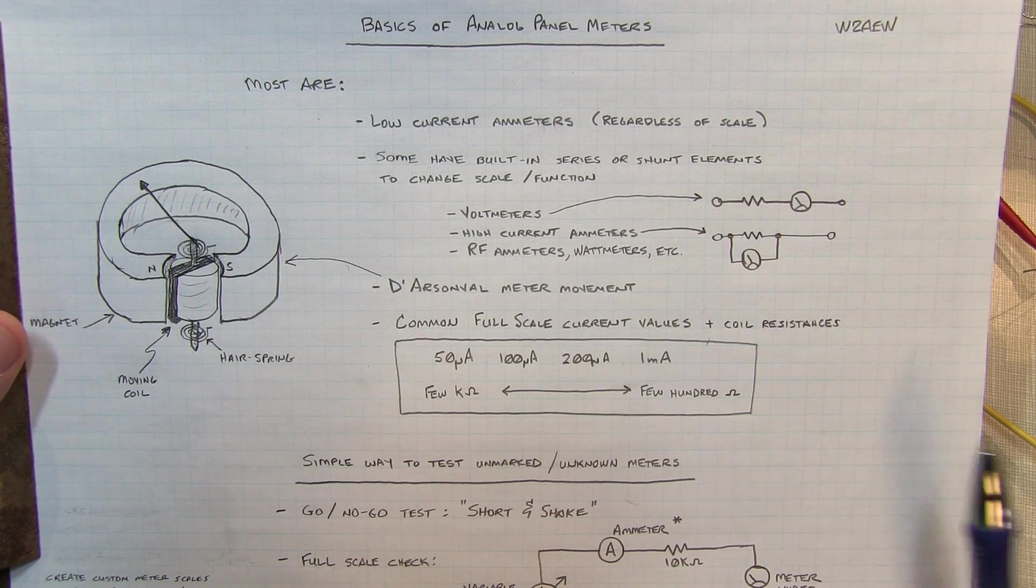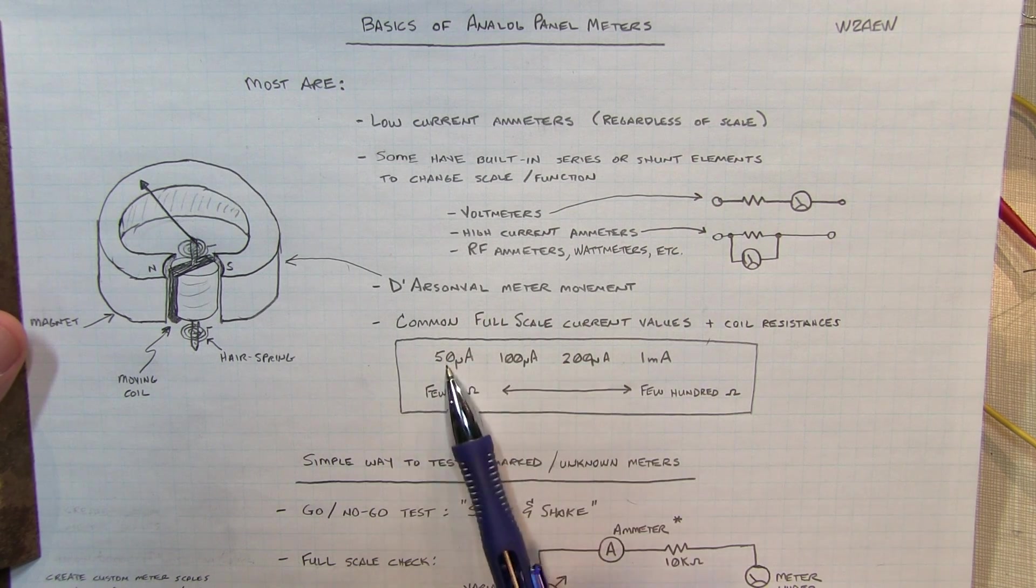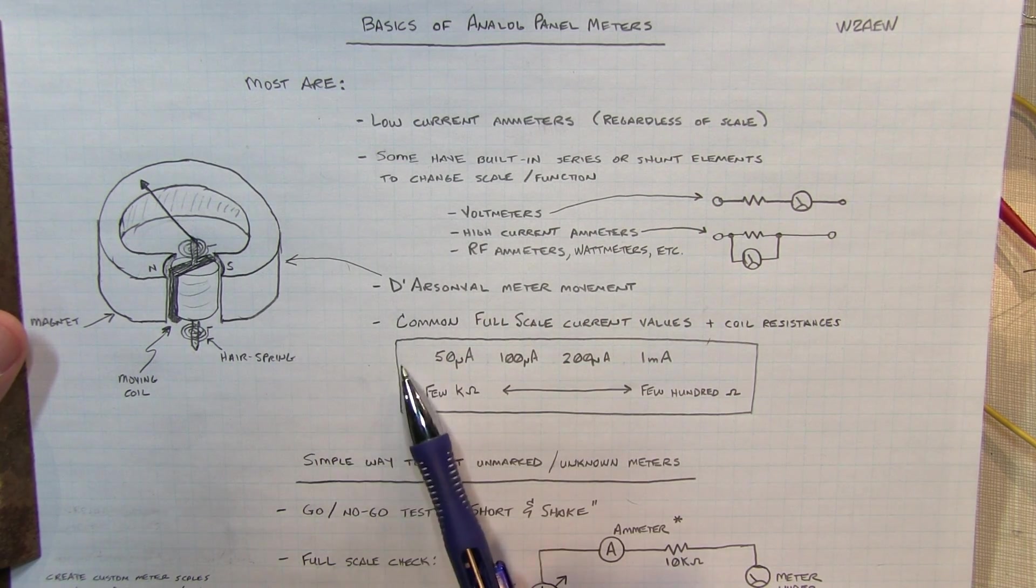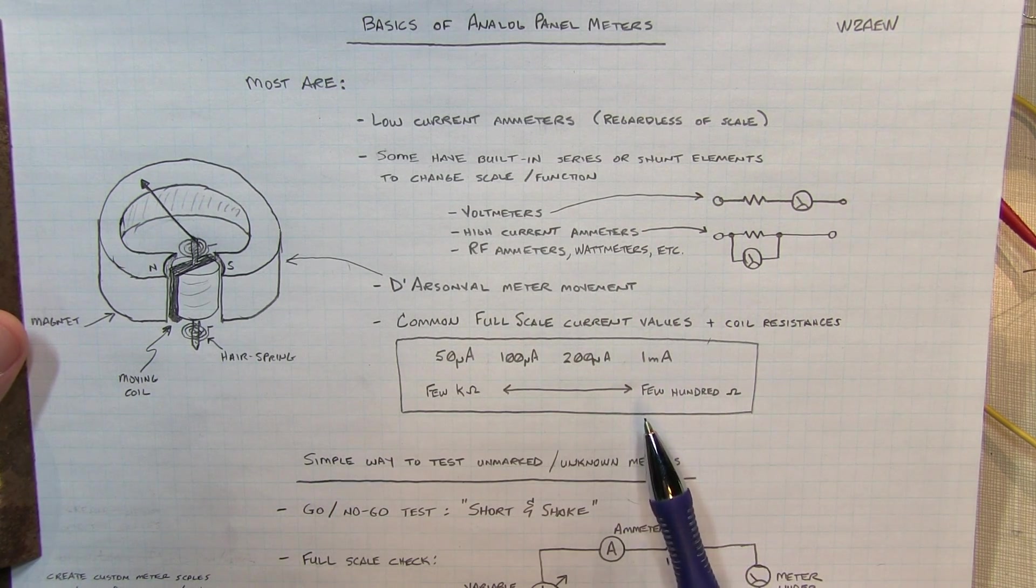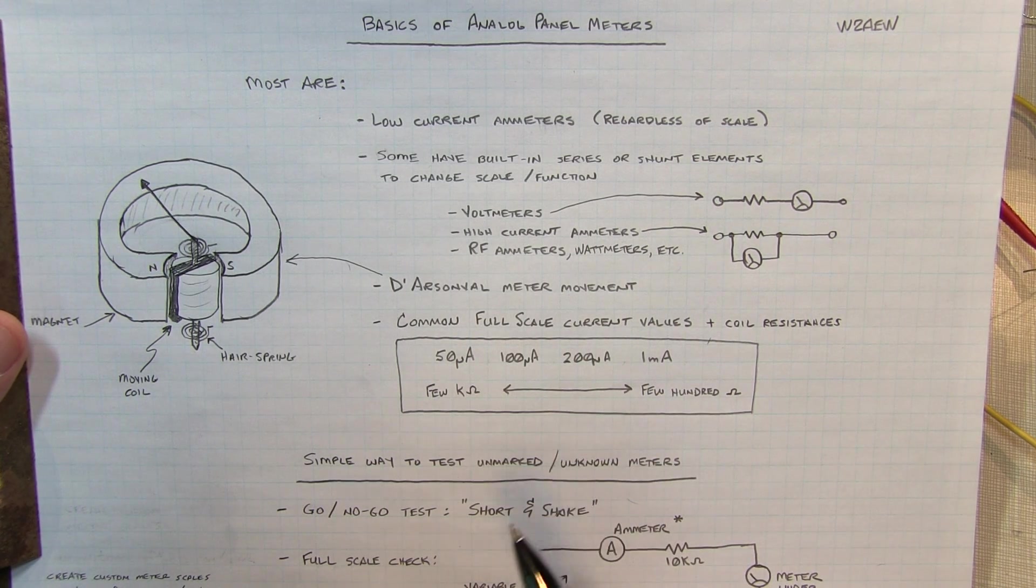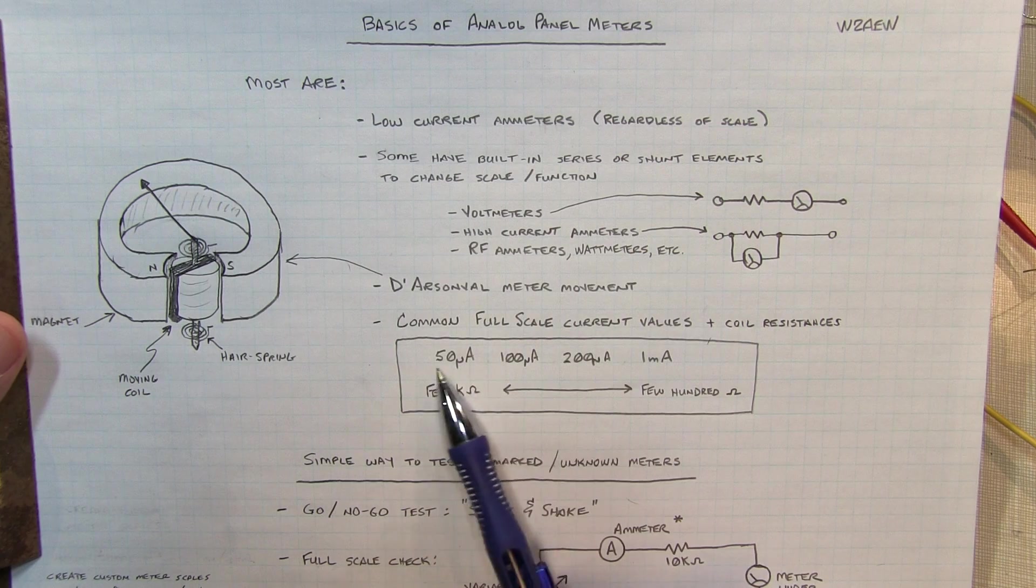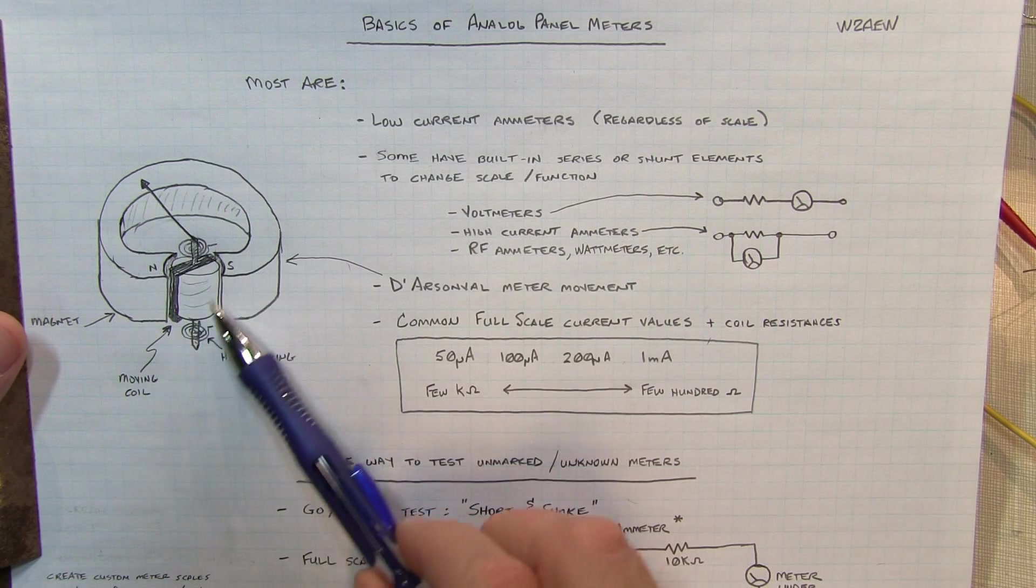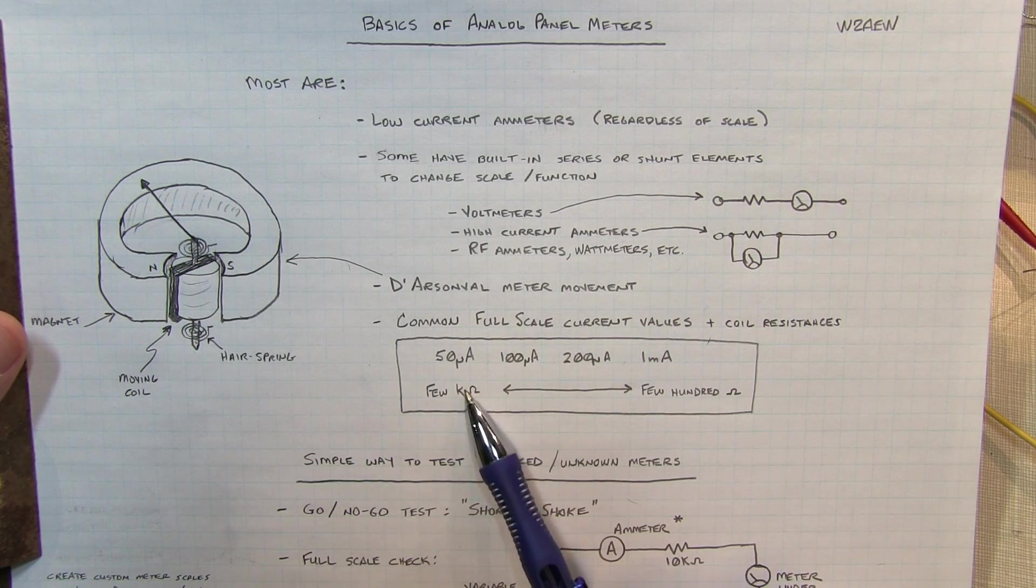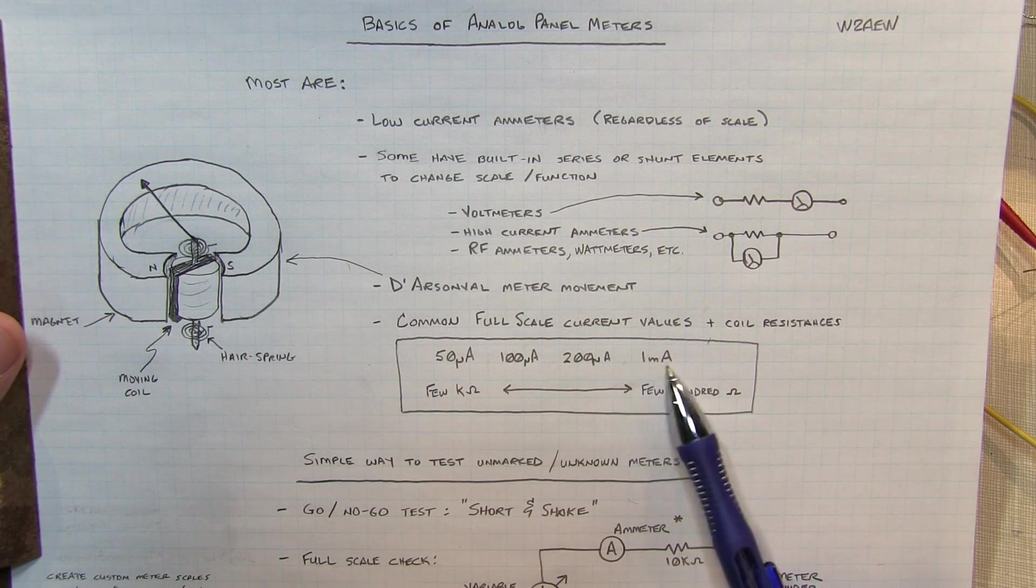Now, the majority of these meter movements have got a full-scale current range that typically lies between, say, 50 microamps and 1 milliamp. There certainly are some that are more sensitive, and there's certainly some that are less sensitive up on the other end of the scale. But the majority of the ones that you may find in the used market or reclaim out of old equipment are going to be like a 50 microamp full-scale or 100 microamp, 200 microamp, 1 milliamp. These are probably the most common that you'll find.